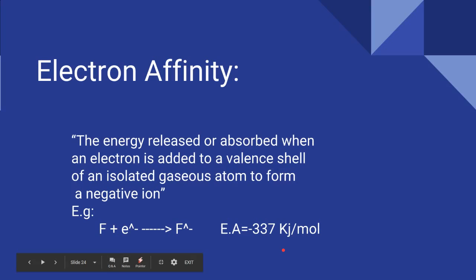Now let's discuss electron affinity. Electron affinity is the energy released or absorbed when an electron is added to the valence shell of an isolated gaseous atom to form a negative ion. For example, fluorine, the first element of the halogen group (group 7A), is highly electronegative, and when it gains an electron it forms an F negative ion. Its electron affinity is minus 337 kilojoules per mole — that is, energy is being released.